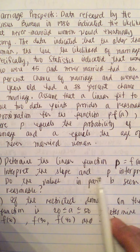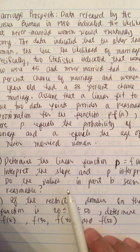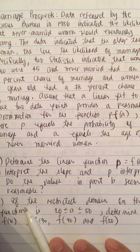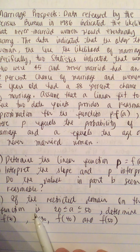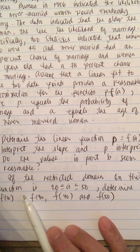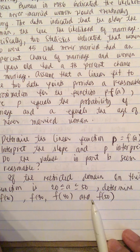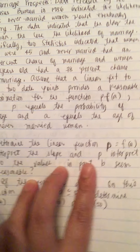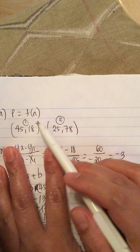They want us to: determine the linear function p equals f of a; interpret the slope and p-intercept; assess whether the values in part b seem reasonable; and, if the restricted domain on this function is a greater than or equal to 20 and less than or equal to 50, determine f of 20, f of 30, f of 40, and f of 50.